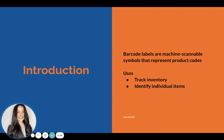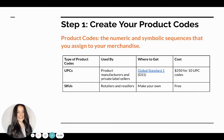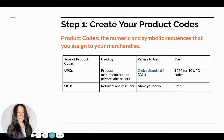Moving on, step one for creating your barcode is going to be creating a product code. Product codes are numeric and symbolic sequences that you assign to your merchandise.